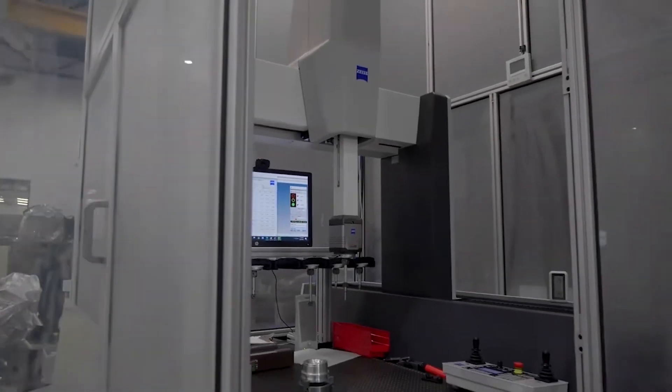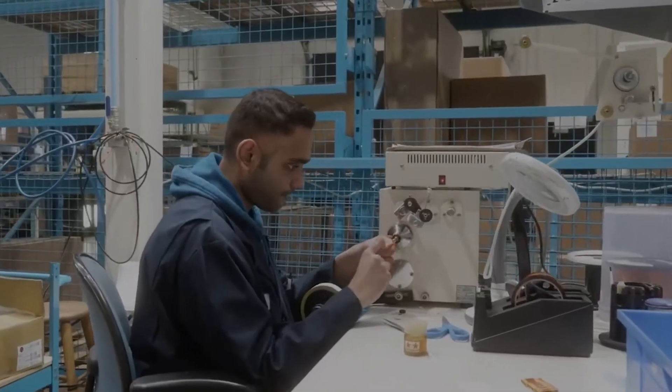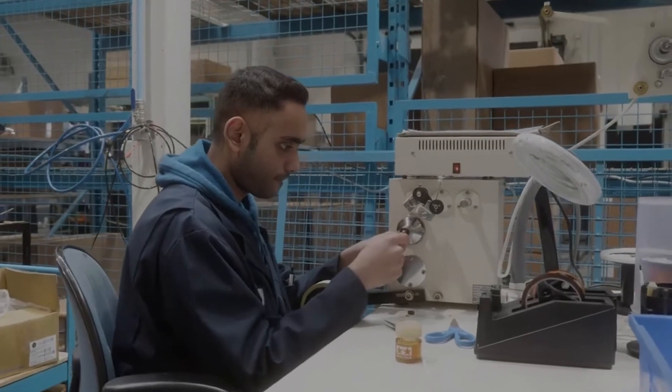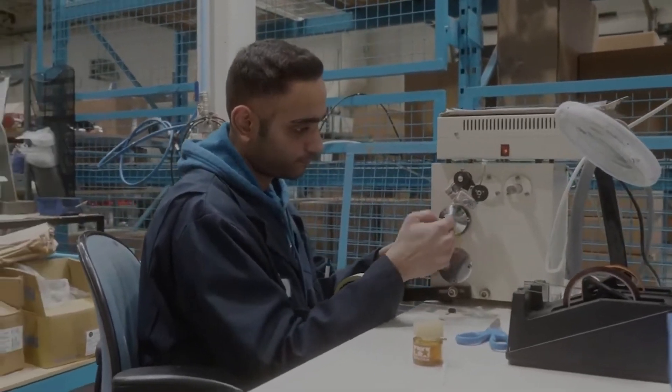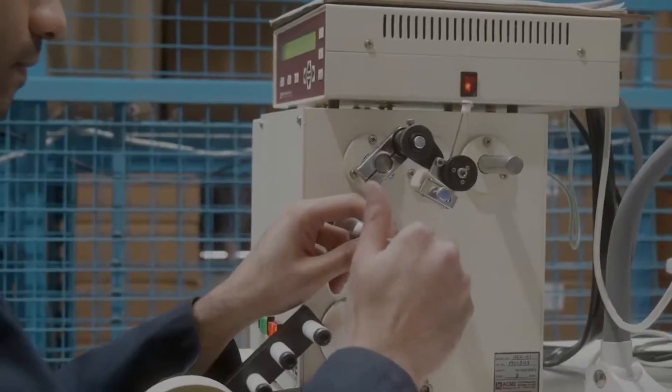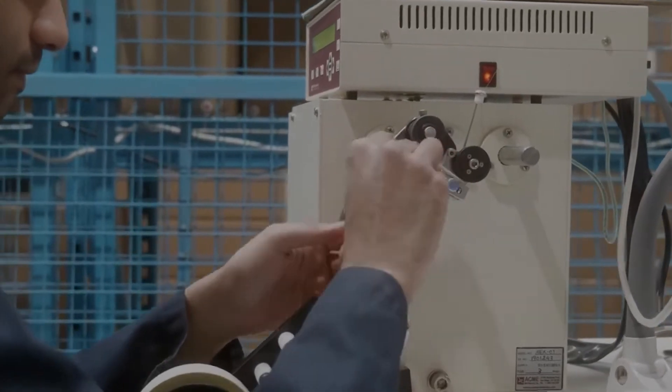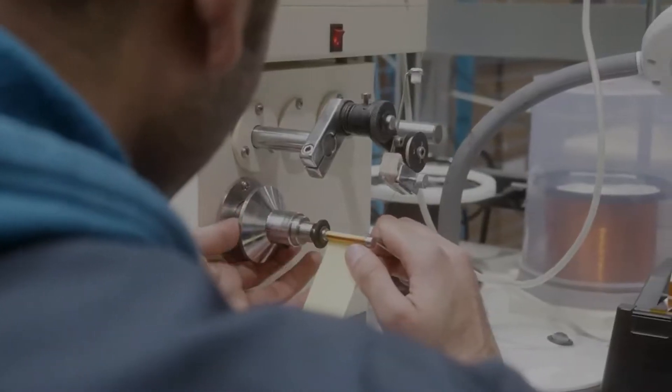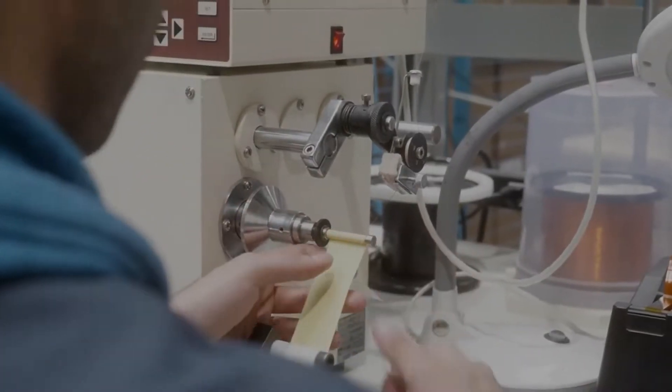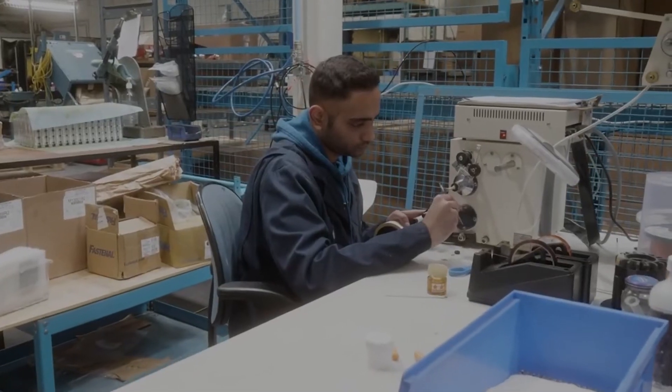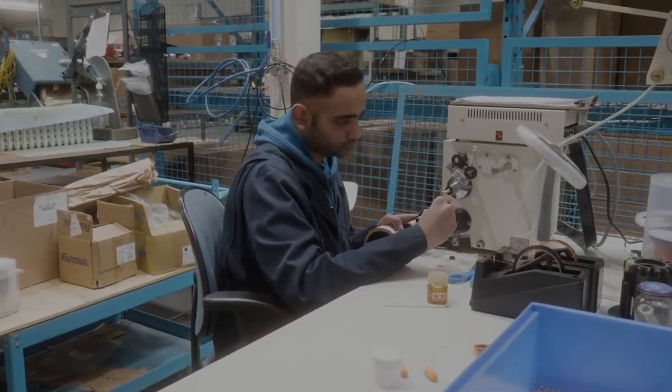Throughout our production process, we ensure part quality and precision with in-machine probing and CMM parts inspection. These steps reduce waste and increase the efficiency of our production facility. This is an example of the standard set by Flexair as an ISO 9001 registered company.